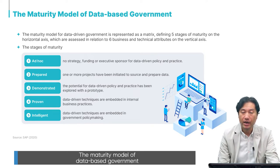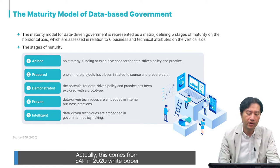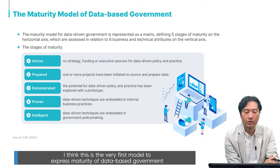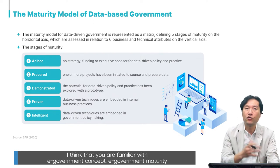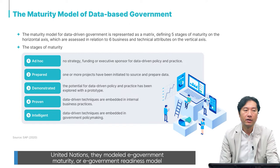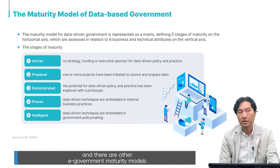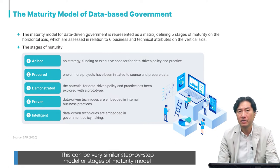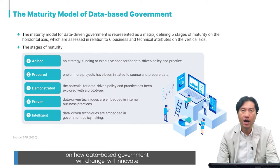The maturity model of data-based government comes from a SAP 2020 white paper. This is likely the first model to express the maturity of data-based government, similar to e-government maturity models developed by the United Nations and other scholars. It is a step-by-step stages model and a kind of prediction of how data-based government will change and innovate in the near future.